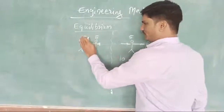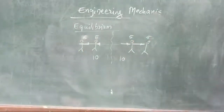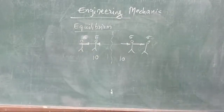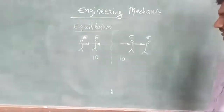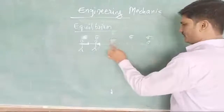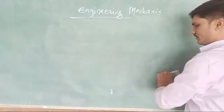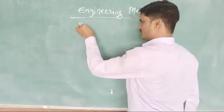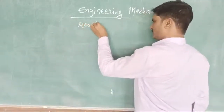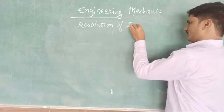Suppose one person is applying around six newtons and now the body is in unequilibrium conditions. So this is called the mechanical equilibrium condition. Now we go to the next topic — that is resolution of forces.